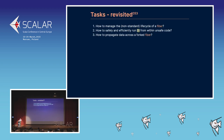Let's revisit the three tasks. The first one is about managing the lifecycle of a fiber — a running WebSocket connection in the background — but it's a tricky lifecycle because it's non-standard. It's not like racing two effects; we would like it bound to the scope of some instance of a WebSocket client object. The second is about how to safely and efficiently invoke I.O. from within unsafe code — the opposite of wrapping unsafe code into I.O. The third is how to propagate data across forked fibers, because if you want to log a correlation ID in the HTTP server, you need to propagate this context across forked fibers.